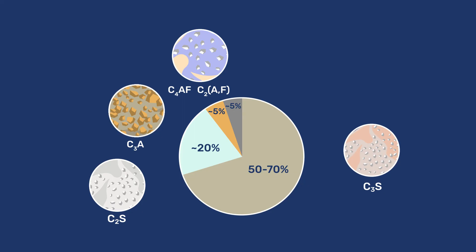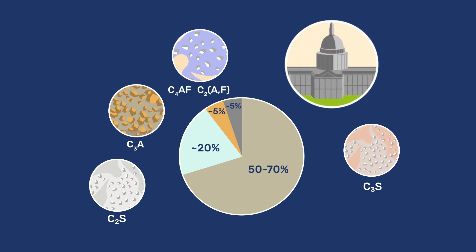Somewhat ironically, this grey colour is what led Aspdin to call this material Portland cement, while C4AF is not responsible for the strength he praised as being on par with Portland stone.